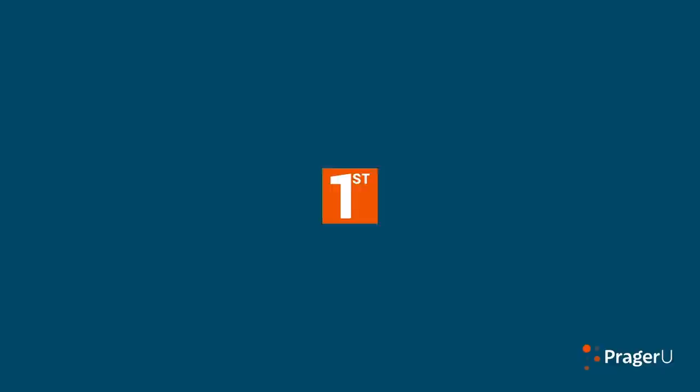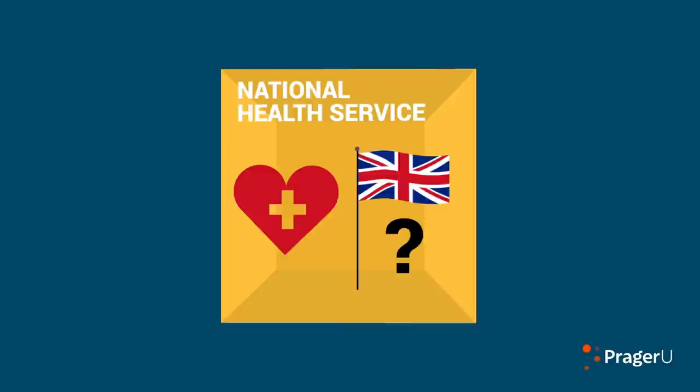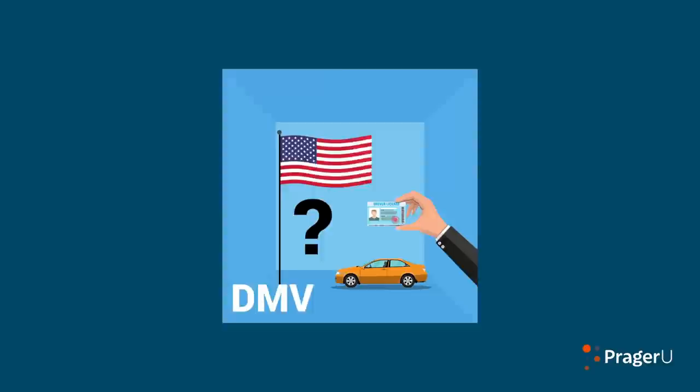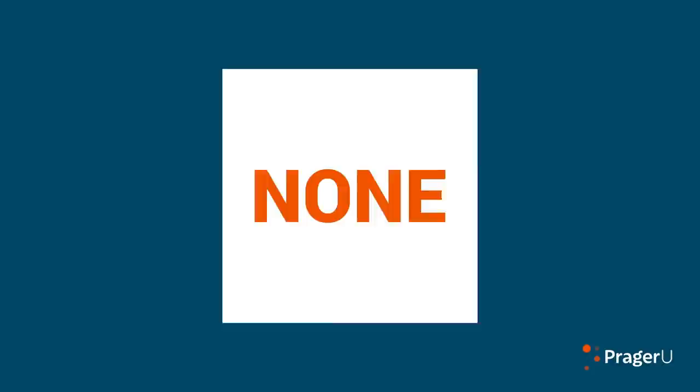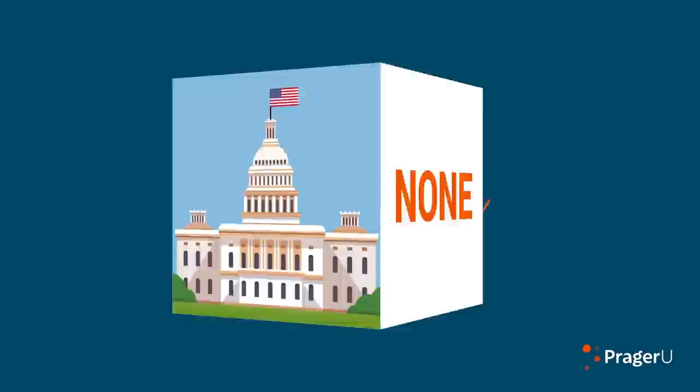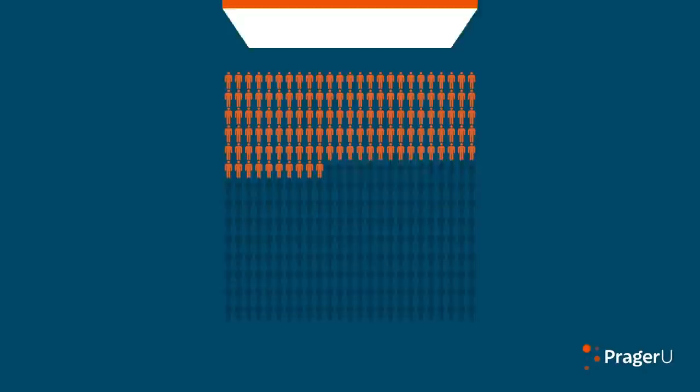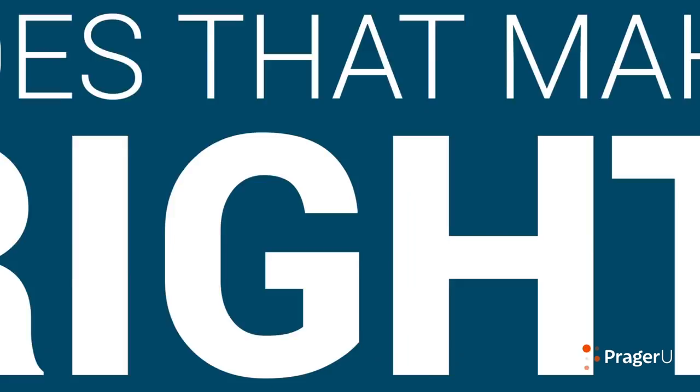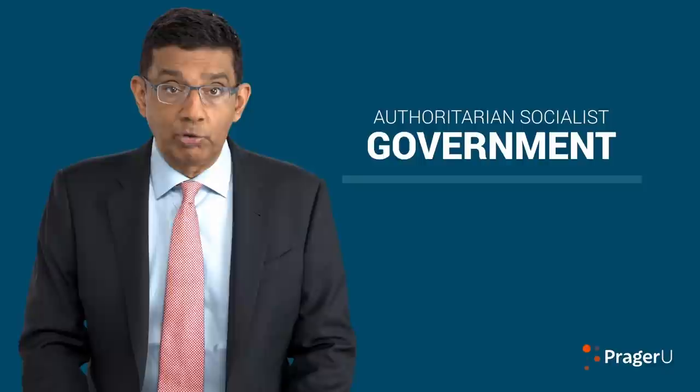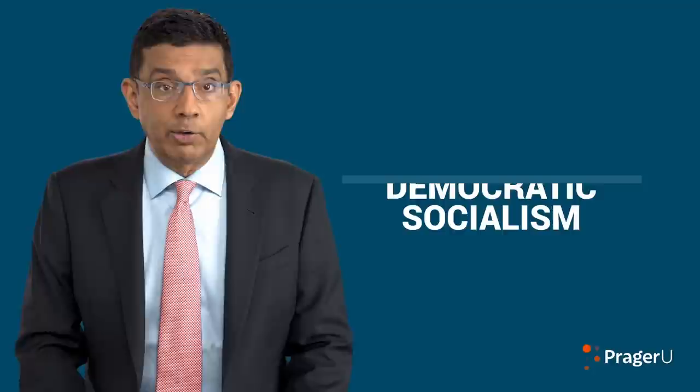First, what direct control do the people really have over any government institution? What control do the British people have over the National Health Service? What control do Americans have over the Department of Motor Vehicles or the U.S. Post Office? The answer, of course, is none. Given its practical impossibility, genuine popular control over government institutions is a mirage. Second, what if 51 percent of Americans vote to confiscate the resources of a single person, say, Bill Gates? Does that make it right? Under an authoritarian socialist government, a single dictator seizes the fruits of your labor. Everyone is against that. Under democratic socialism, a majority does. The end result is the same. You've been robbed.